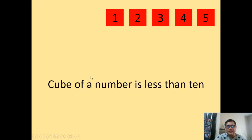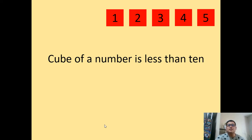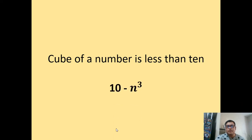This time, given an English statement, you are going to translate it into a mathematical or algebraic statement. Cube of a number is less than 10. The correct answer is 10 minus n cubed. Some of you may have written n cubed minus 10, but there is a specific difference — 'cube of a number is less than 10' is different from 'cube of a number less 10.' That's why the answer here is 10 minus n cubed.